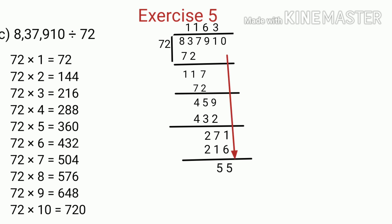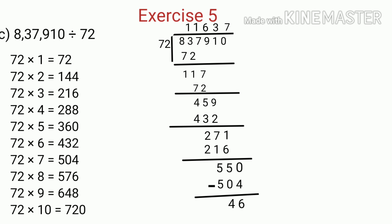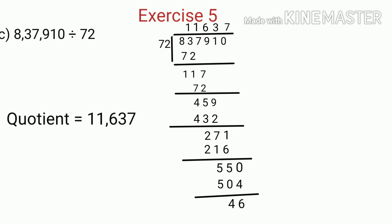Now we bring down the next digit, that is 0. And then we compare 550 and 72. Since 550 is greater than 72, we find a product of 72 which is equal to, or less than, and nearest to 550. We get the nearest product as 504. So we write 7 in the quotient, because 72 multiplied by 7 is equal to 504. And then we subtract 504 from 550, which is equal to 46. Now since there are no more digits to bring down, we can stop the division. So when we divide 8,37,910 by 72, we get the quotient as 11,637 and the remainder as 46.